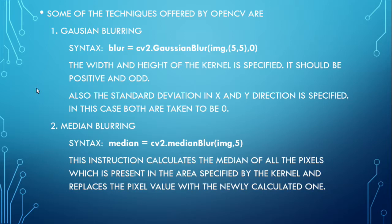The next technique is median blurring. The syntax is: median = cv2.medianBlur(img, 5). This instruction calculates the median of all the pixels which is present in the area specified by the kernel, and it replaces the pixel value with the newly calculated one.